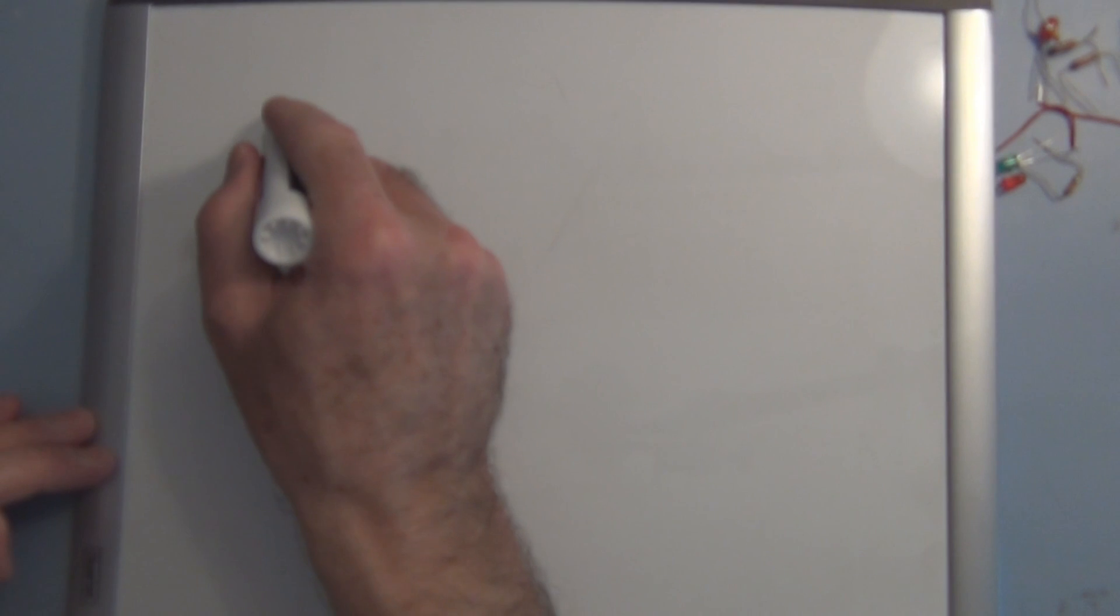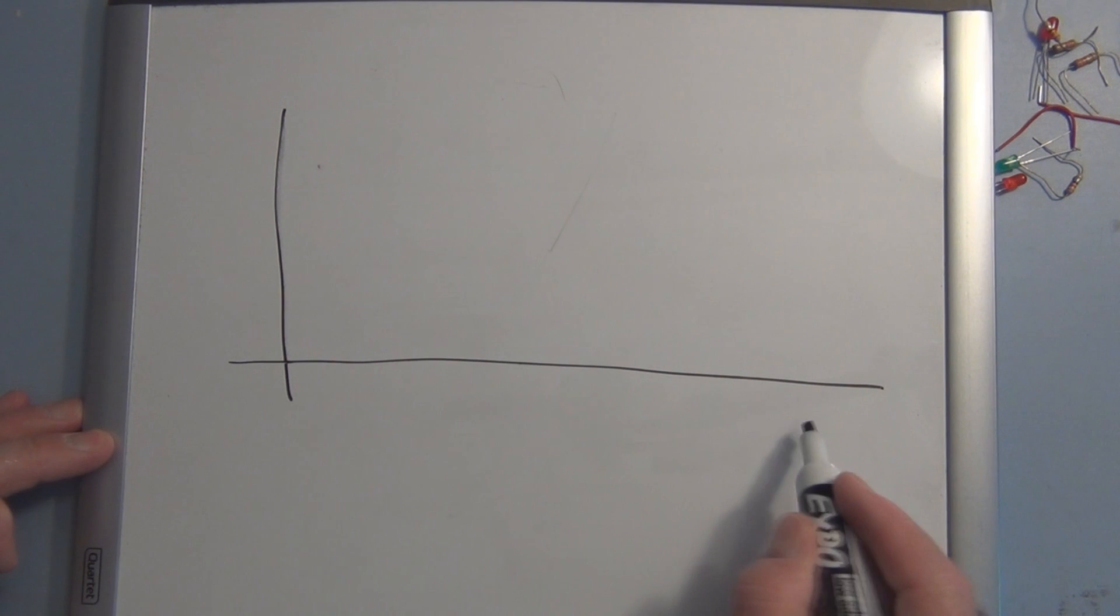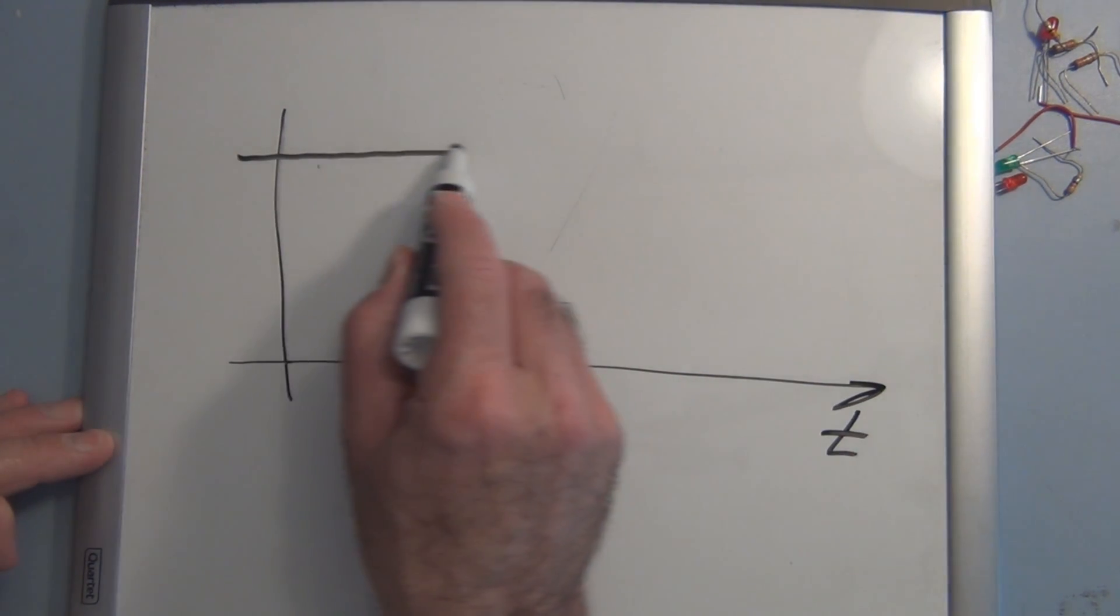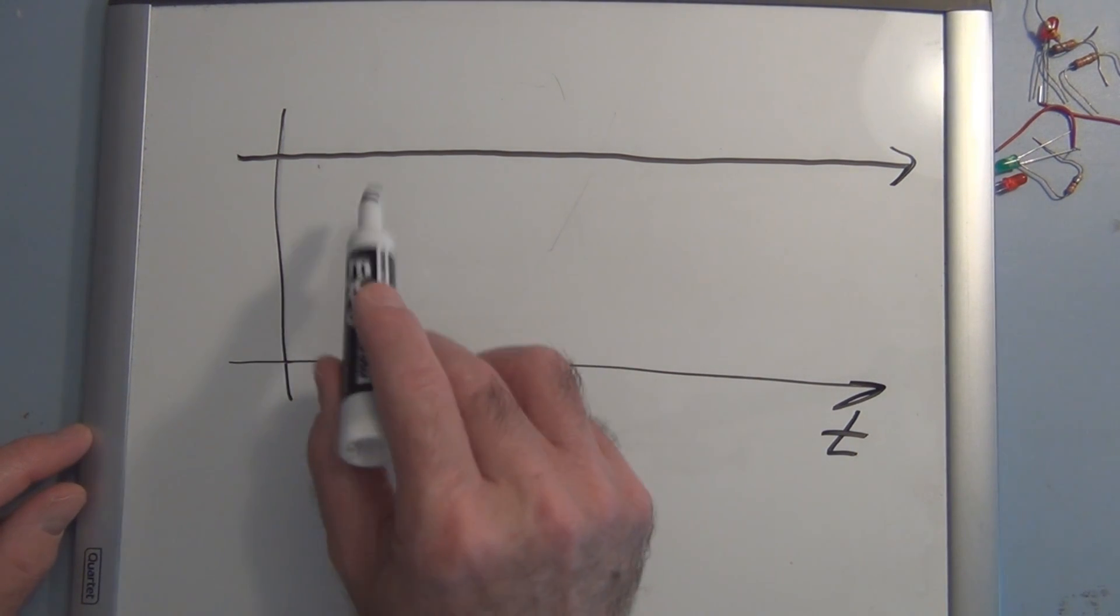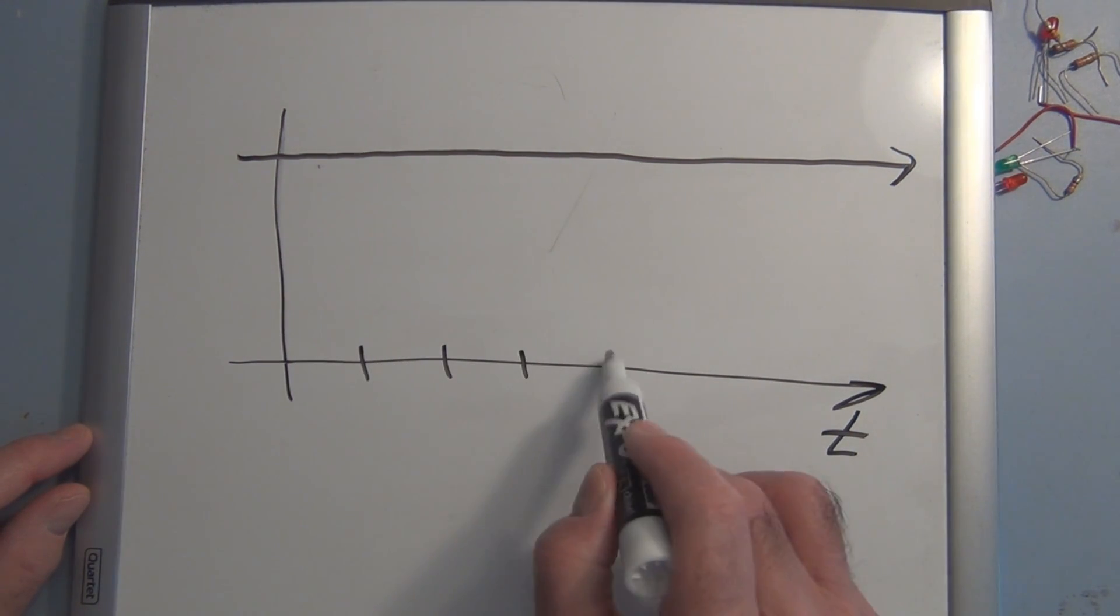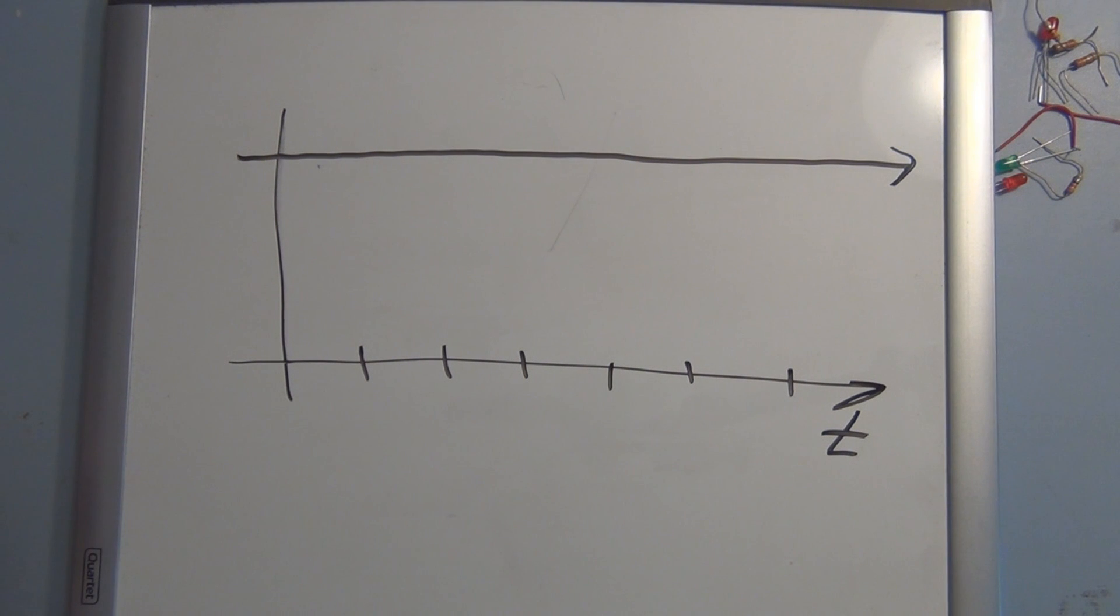And what that means is if you had a graph here showing, if you have a 9 volt battery, and this is time, you know that at each point in time, no matter where you look, you're going to have 9 volts. So as you progress down this time axis here, you always have the 9 volts.